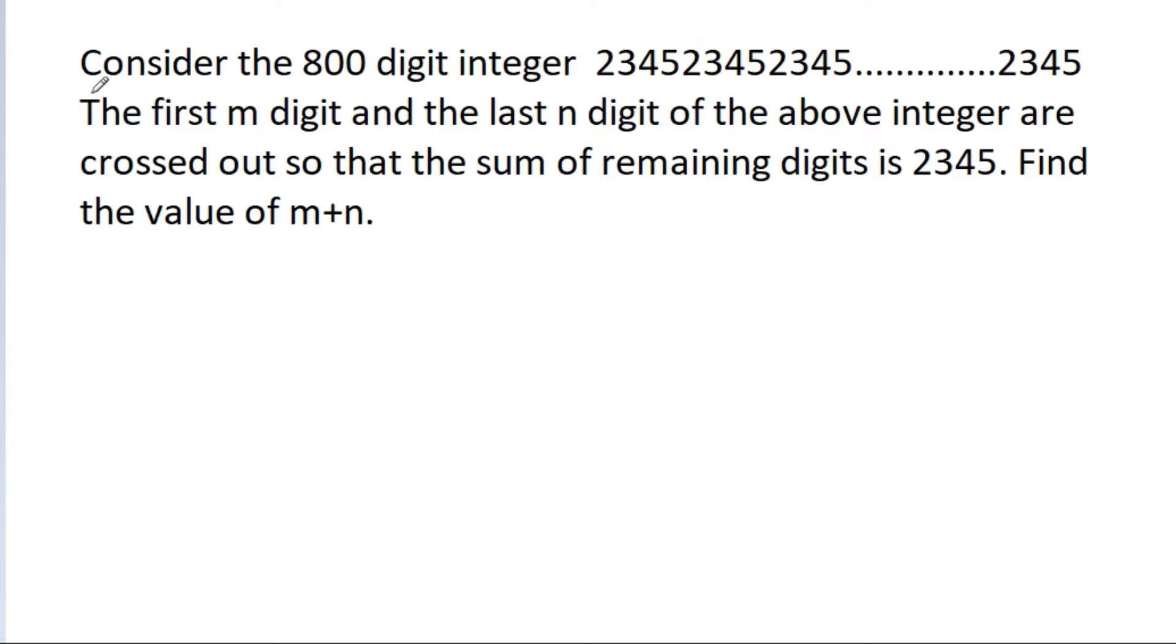In this video, we have to consider the 800-digit integer 2345, 2345 and so on. The first m digits and the last n digits of the above integer are crossed out so that the sum of remaining digits is 2345. We have to find the value of m plus n.